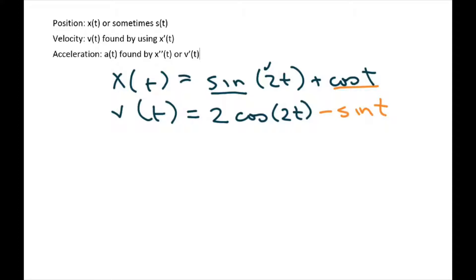All right, and then we have to do it again for acceleration. Take the derivative of the velocity, and so you multiply those two and you get 4. The derivative of cosine is negative sine, so I'll pull the negative here. And you write sine of 2t. And the derivative of sine is cosine, so you just write minus cosine of t.